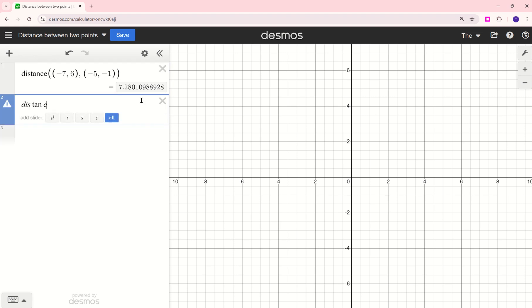One final way is if I labeled my two ordered pairs. So I'm going to call this one A, and I'm going to call this one B. If I want to find the distance between A and B, I just type them in just like that. And you'll see that I get the same result.